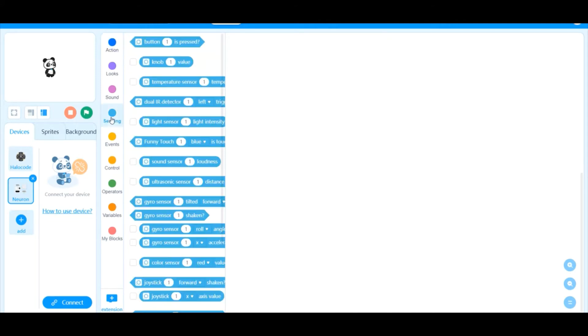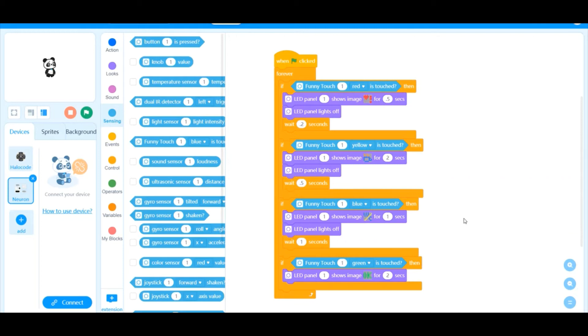For example, in the sensing, I have funny touch which can be used to detect any of this four wire touch. Here is the program that I have created. I'm using a forward loop and detecting those touch points. When it is touched, I do a specific action.